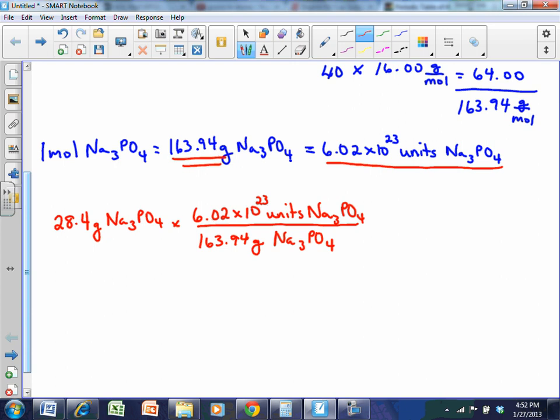But that's not what the question is. The question is how many atoms of oxygen are there. And so each unit of Na3PO4 has four atoms of oxygen. So if I have one Na3PO4, I have four oxygen atoms. If I have two Na3PO4, I have eight oxygen atoms. Or if I have one mole of Na3PO4, I have four moles of oxygen atoms. So I have four atoms of oxygen for every one unit of Na3PO4.